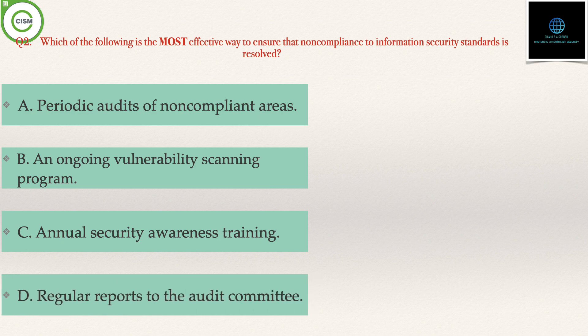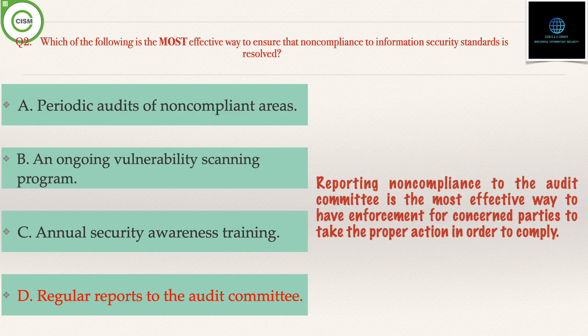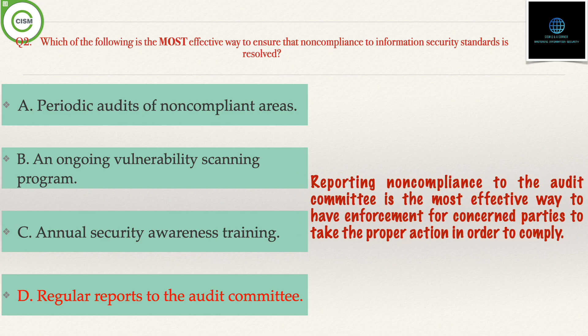Option D is regular report to the audit committee. The correct answer is option D, regular reports to the audit committee, because reporting non-compliance to the audit committee is the most effective way to have enforcement for the concerned parties to take proper action in order to comply.